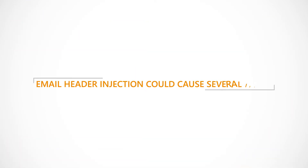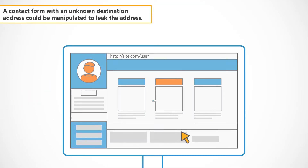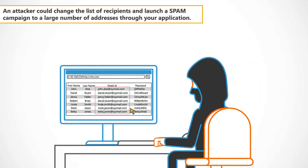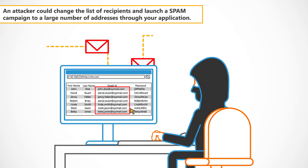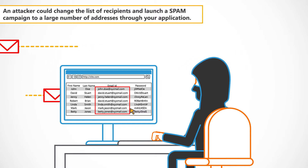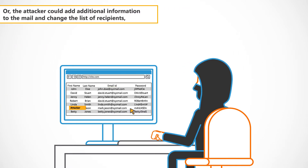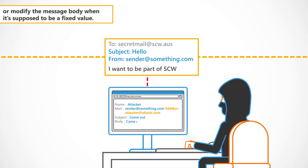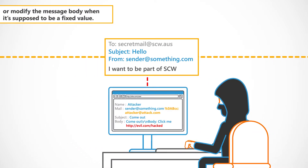Email header injection could cause several issues. A contact form with an unknown destination address could be manipulated to leak the address. An attacker could change the list of recipients and launch a spam campaign to a large number of addresses through your application, or add additional information to the mail, change the list of recipients, or modify the message body when it's supposed to be a fixed value.